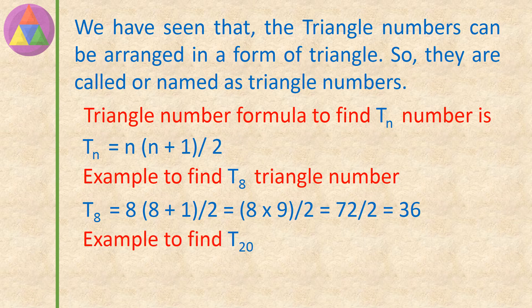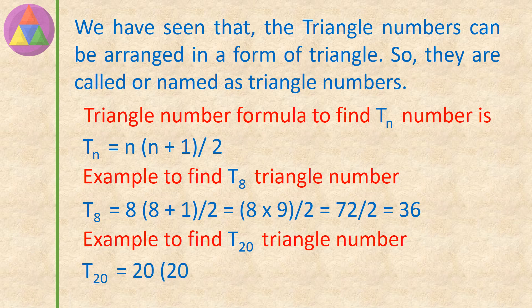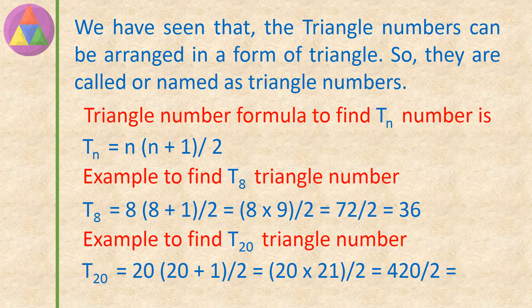Example: to find T20, the triangle number where n equals 20. T20 equals 20 into (20 plus 1), divided by 2, which equals 20 into 21, divided by 2, which equals 420 divided by 2, giving the T20 value as 210.